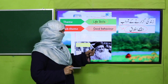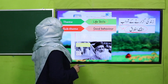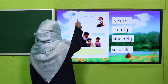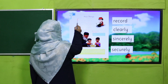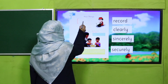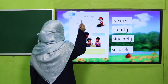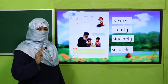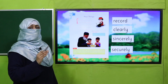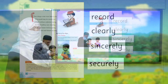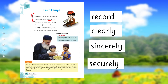Let's understand the poem. First of all, the poet says: 'Four things a man must learn to do if he would keep his record true.' This means that to live life in a good way, we need to keep our record — our book of deeds — clean and good.